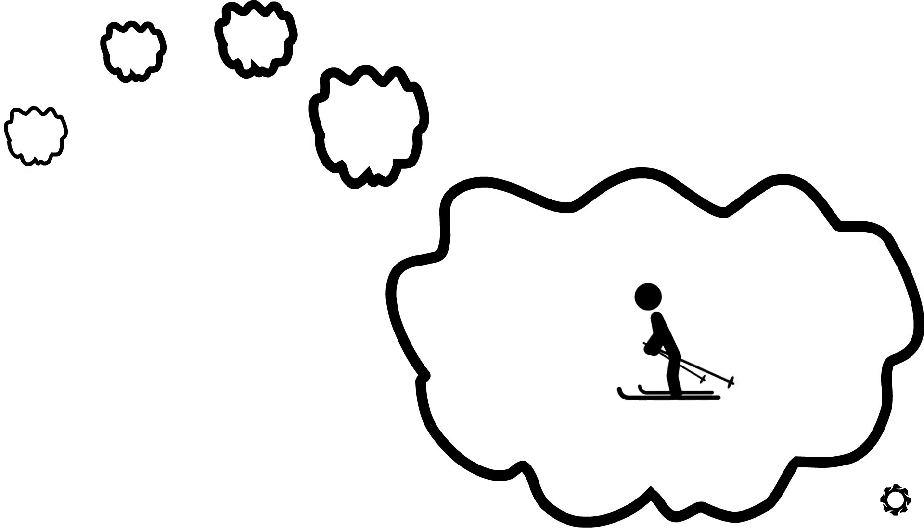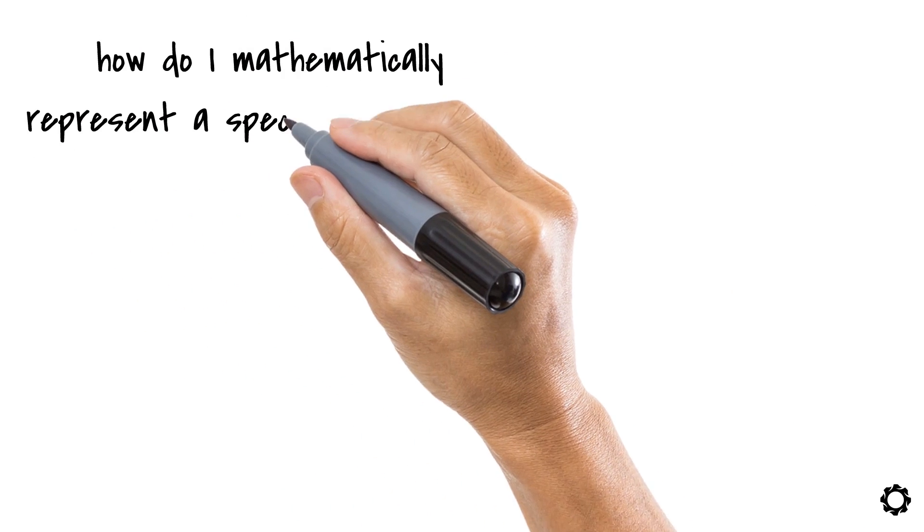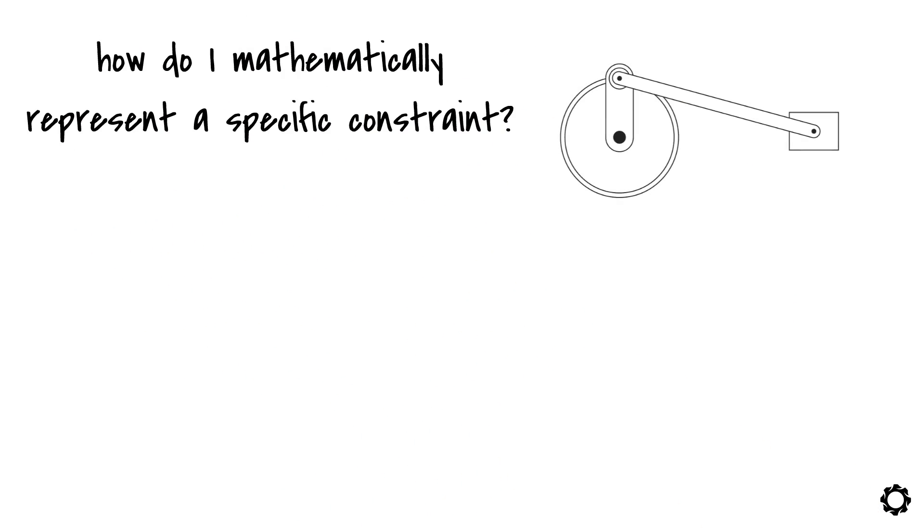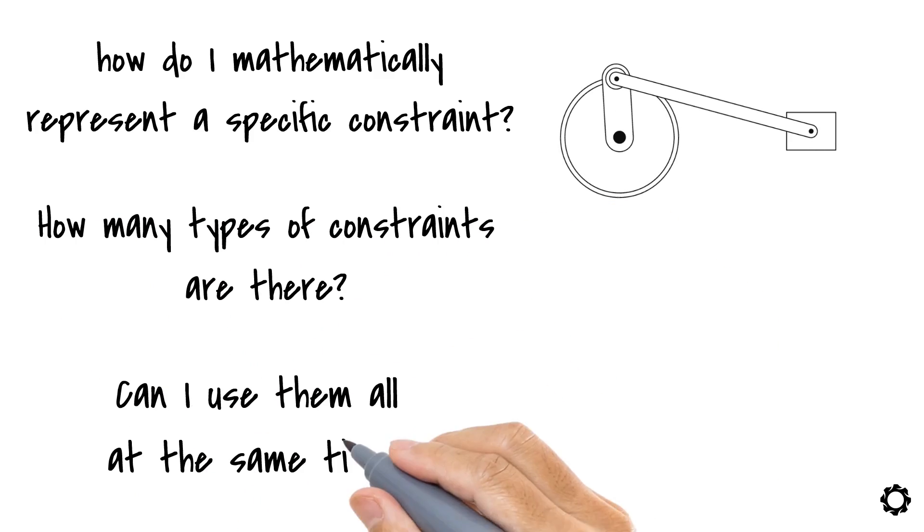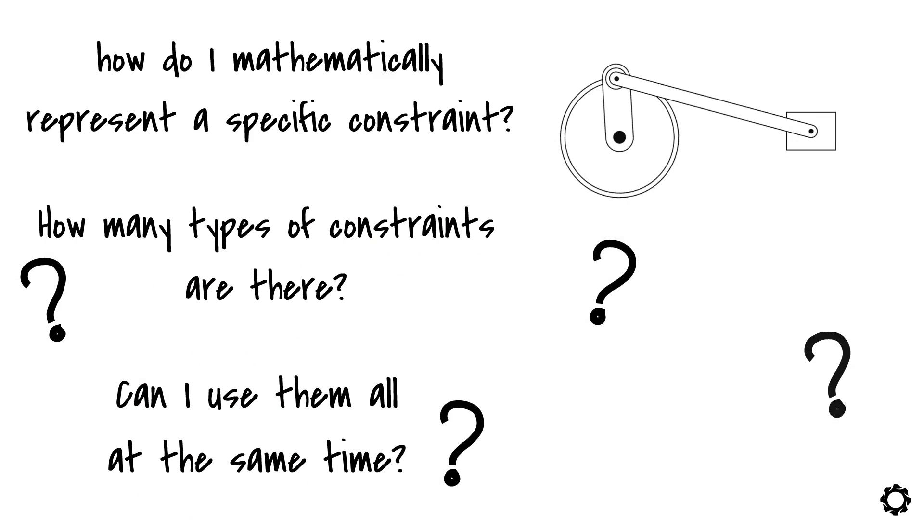This is the point where our mind could start wandering. You can tell me, okay, but how do I mathematically represent a specific constraint such as those you described for the crankshaft mechanism? How many types of constraints are there? Can I use them all at the same time? For sure, these and many other questions are popping up in your head. Be patient. They will get an answer throughout our lessons.